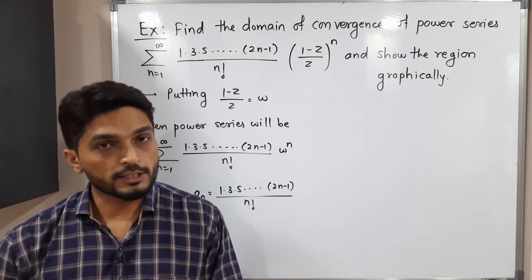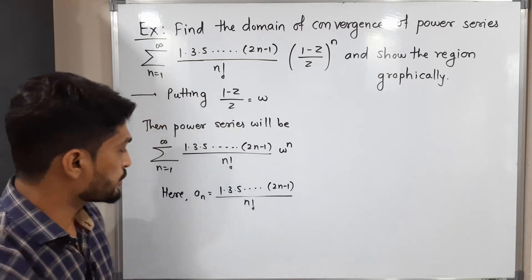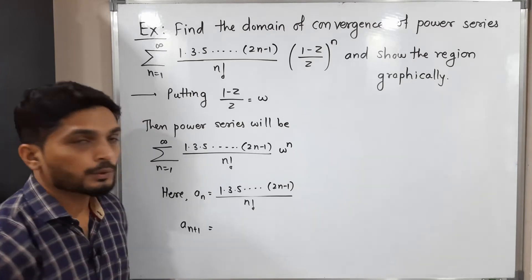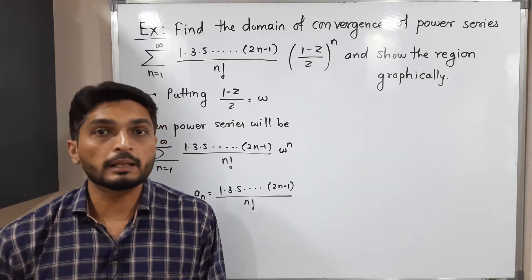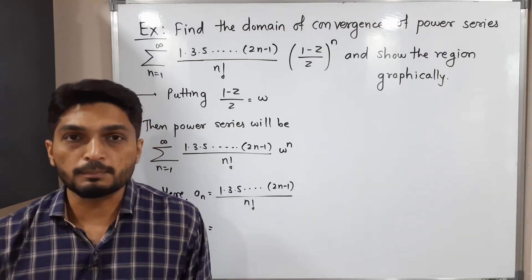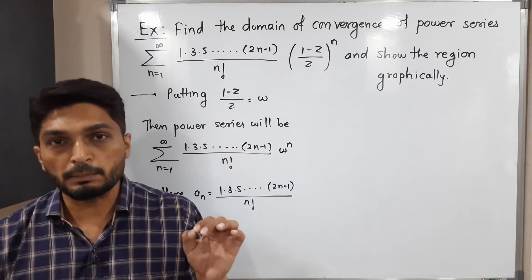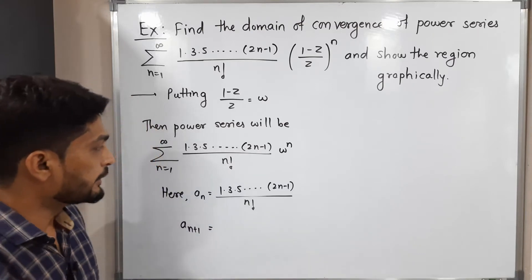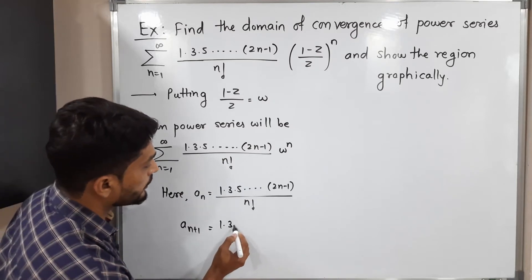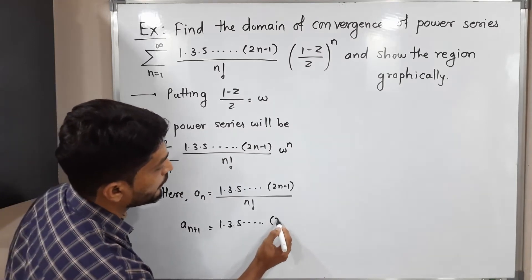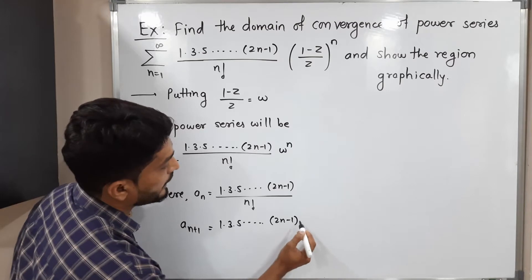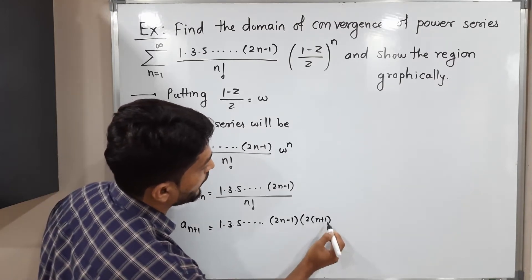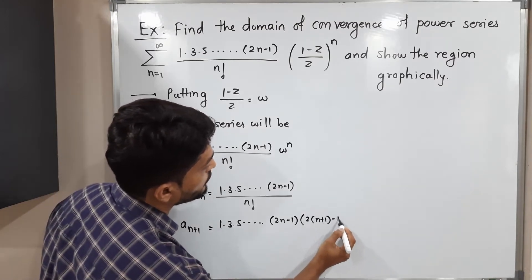To find a_{n+1}, the technique is simple: replace n by n+1 everywhere. So a_{n+1} equals 1 times 3 times 5 and so on to (2(n+1) minus 1), which gives (2n+1), divided by (n+1) factorial.